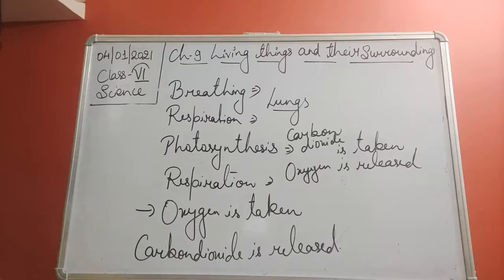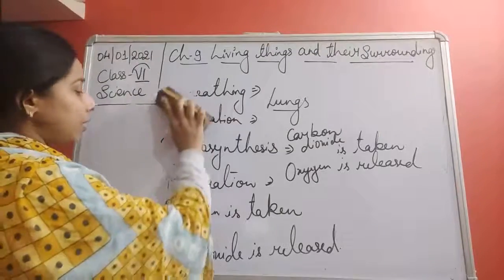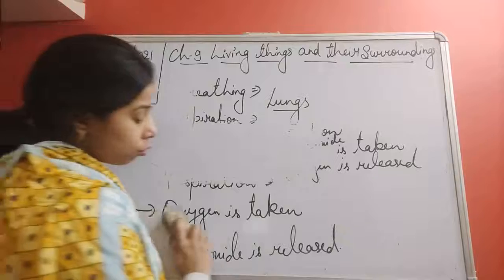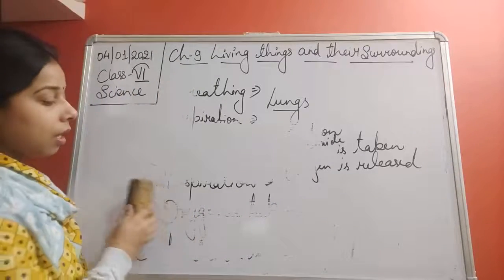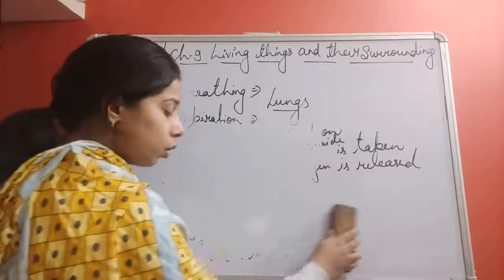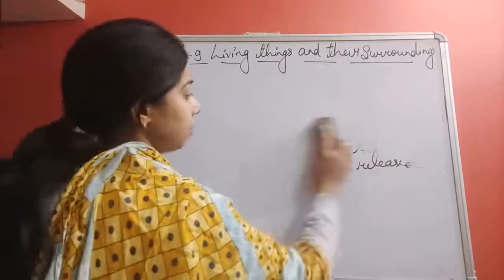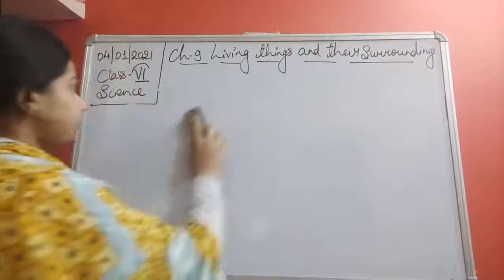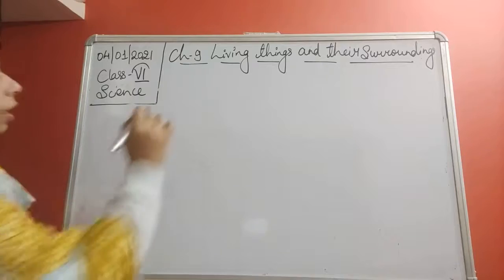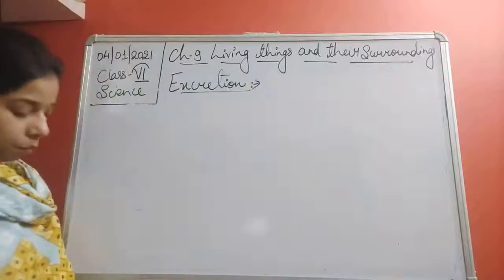Now let us look at the next topic, which is excretion. We have seen all the different types of respiration, including how plants respire. Breathing and respiration are characteristics of living things - they exchange gases. Non-living things do not show exchange of gases and do not perform breathing or respiration.